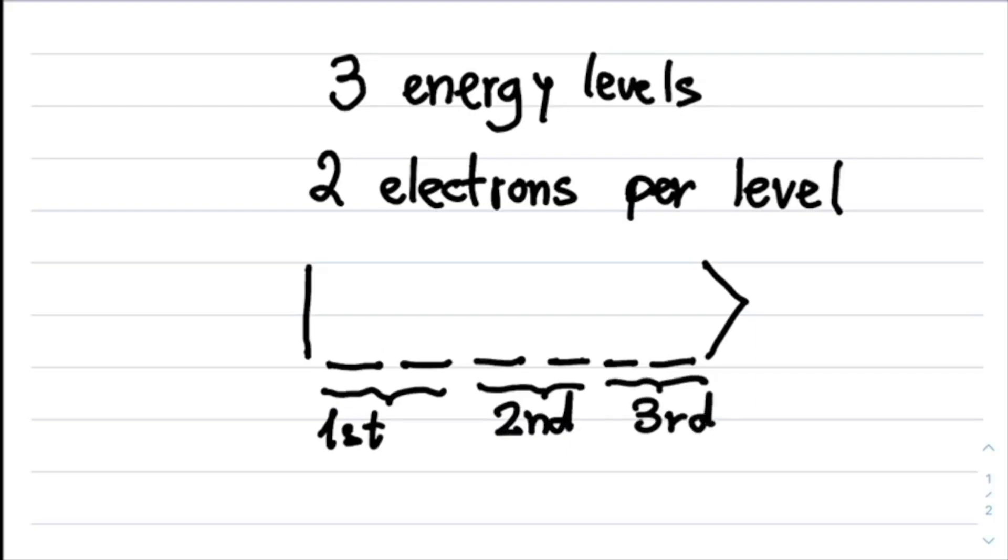What is the difference between the first and the second slots, for example, in the first energy level? The first slot represents an electron with spin up, and the second slot an electron with spin down. And the same thing for the second and third energy levels.